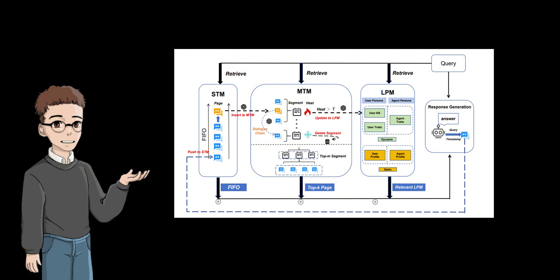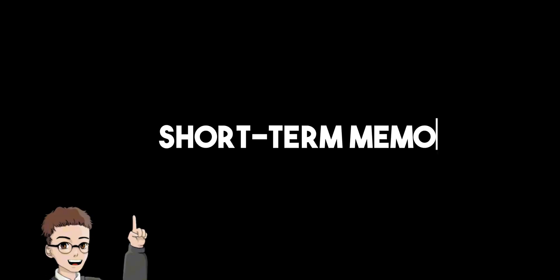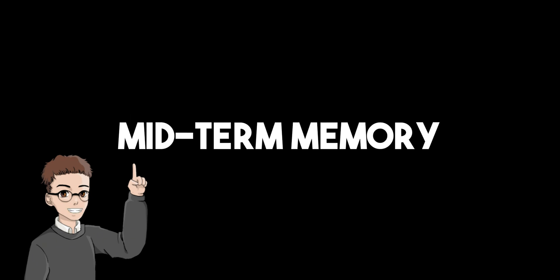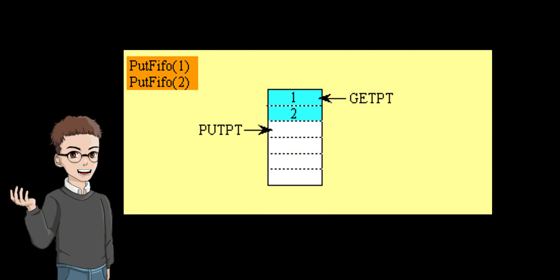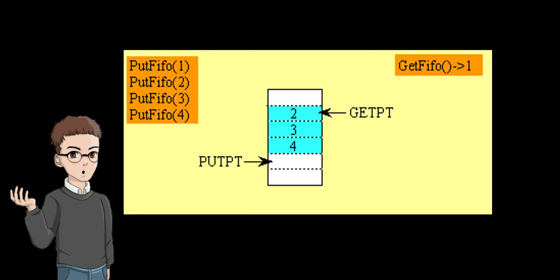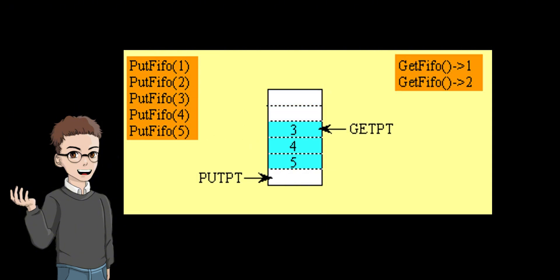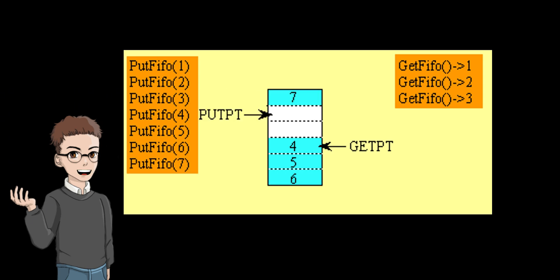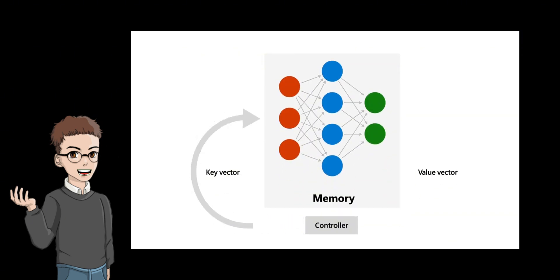MemoryOS is a memory management system designed to extend the capabilities of AI agents by addressing their limited context windows. It introduces a hierarchical memory structure with short-term memory for real-time interactions, mid-term memory for topic-based grouping, and long-term personal memory (LPM) for storing user traits and preferences. Memory is updated dynamically using first-in-first-out and heat-based strategies, ensuring important information is retained over time. Semantic retrieval helps fetch relevant context across all memory layers, enabling the AI to generate more coherent, personalized, and context-aware responses across sessions.